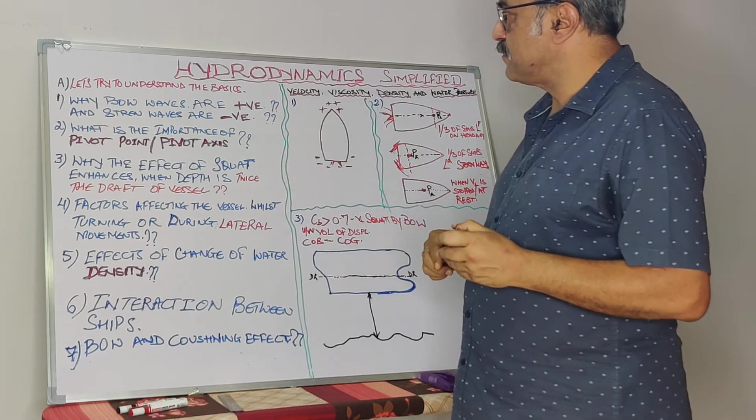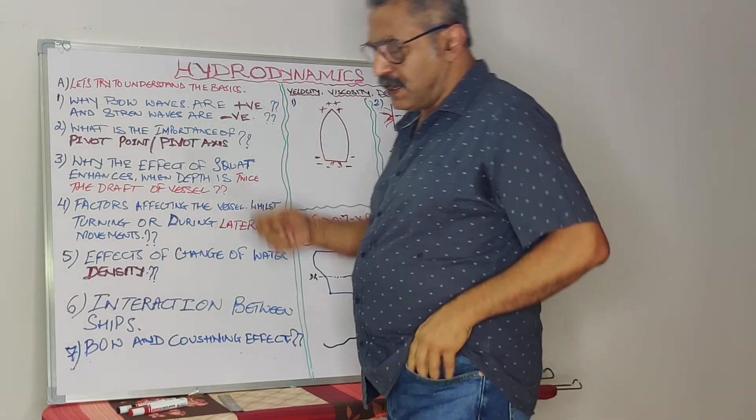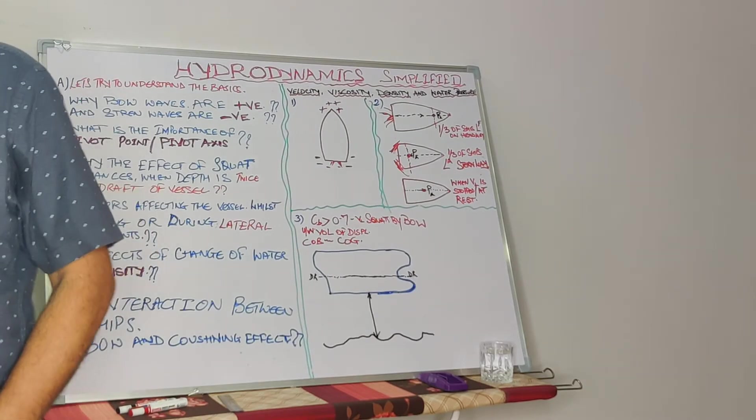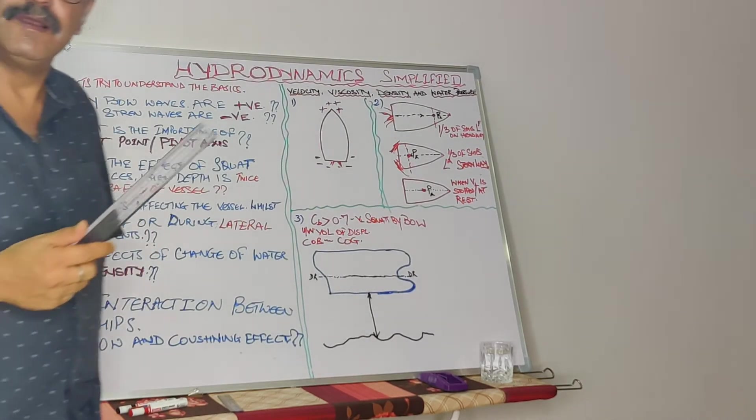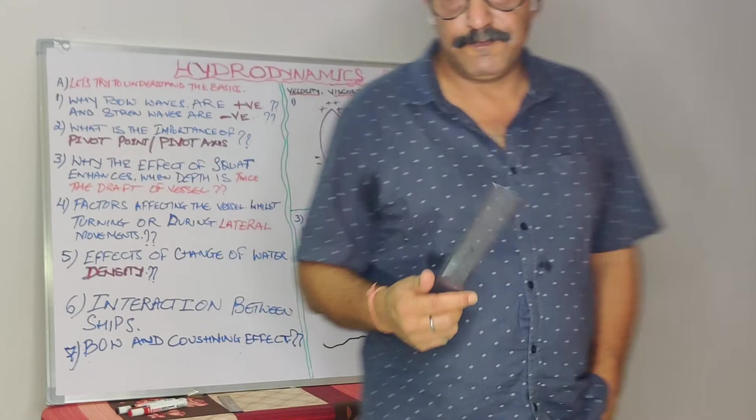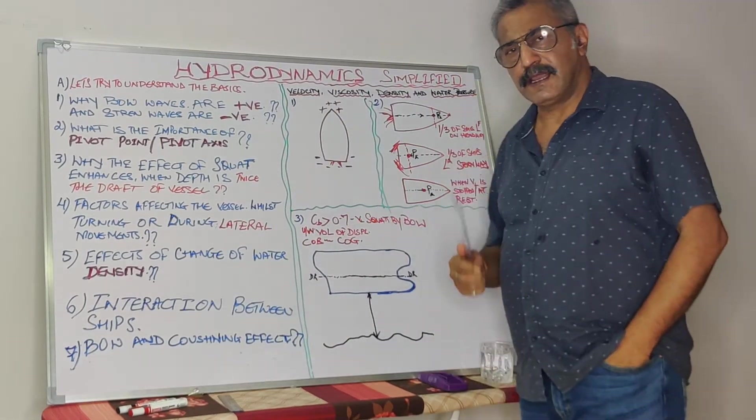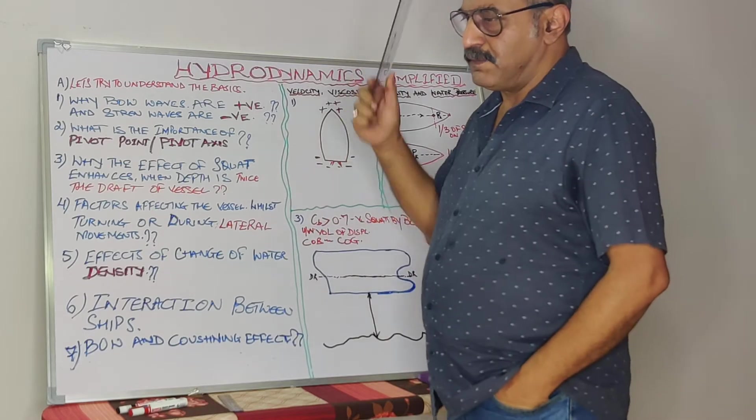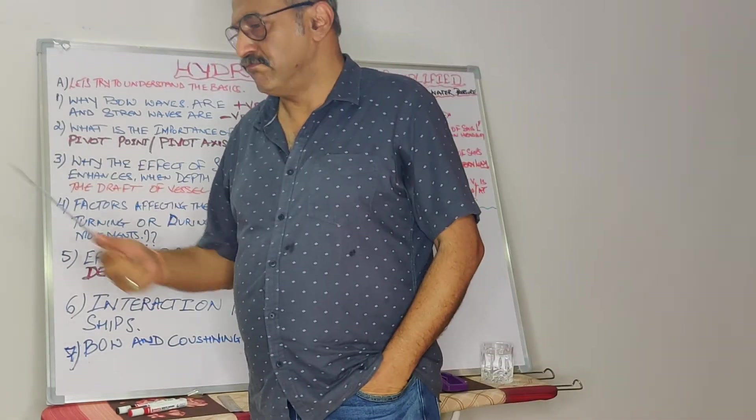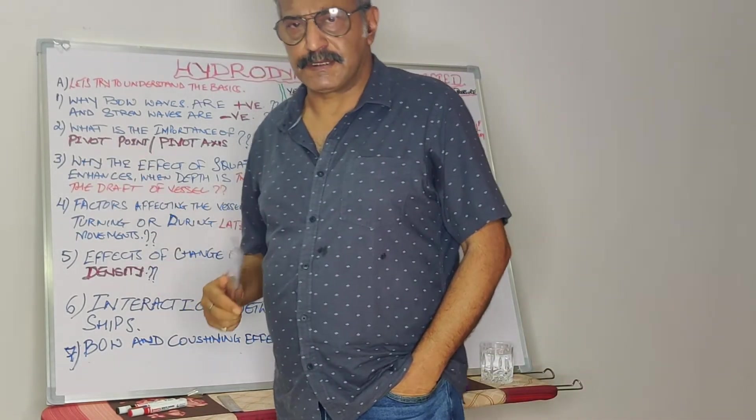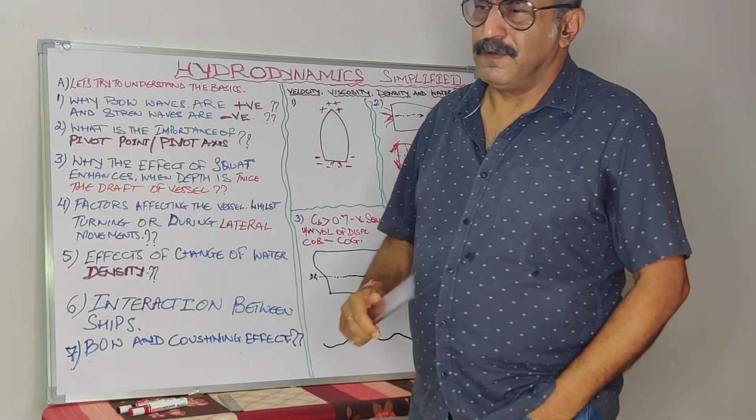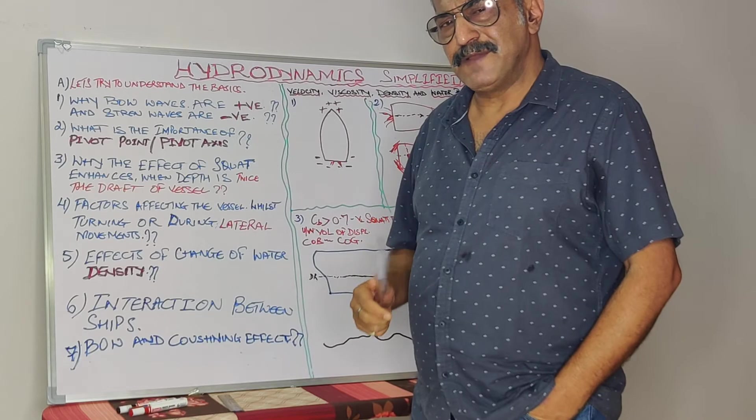Coming to that, you see, we have read loads of books. We know it's become a thumb rule that the bow waves are positive and the stern waves are negative. We all know, we have studied right from our mates, or maybe from second mates time, but why are they positive, the bow waves, and why the stern waves are negative?